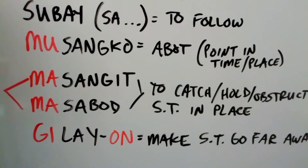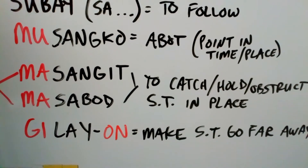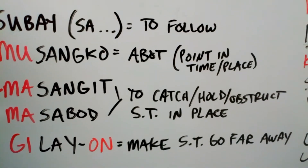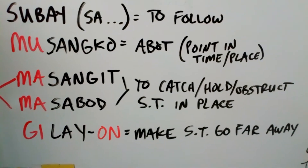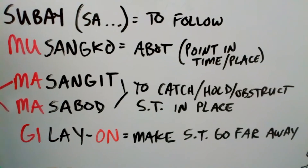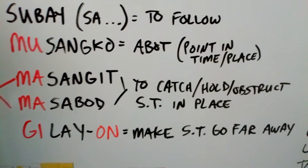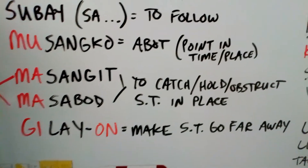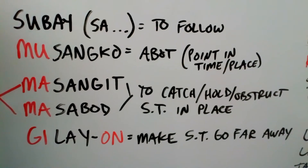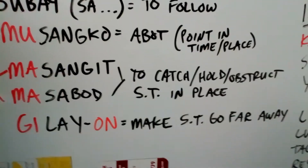Sabod is also similar to masangit. The perfect example of sabod is: you're walking down the hallway or a passageway and there's a table in the passageway. You're walking in your bare feet, running, and the part of your foot or your toes got caught on the table — it's not a pleasant feeling, it hurts. Sabod is that perfect example to describe that obstruction in place of something — to catch something in place. It caught your foot, it caught your toe.